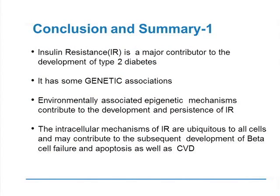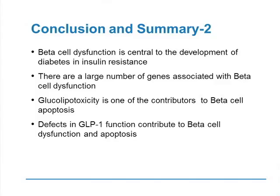In conclusion: insulin resistance is a major contributor to the development of type 2 diabetes. It has some genetic associations, but environmentally associated epigenetic mechanisms contribute most to its development and persistence. The intracellular mechanisms of insulin resistance are ubiquitous to all cells and contribute to subsequent beta cell failure and apoptosis. But to actually get diabetes — to get an abnormal sugar — you must have beta cell dysfunction. This loss of beta cells is what allows diabetes to develop and progress inexorably. Going forward, we aim not only to control glucose but to stop this apoptotic process, potentially attenuating and changing the natural history of diabetes.